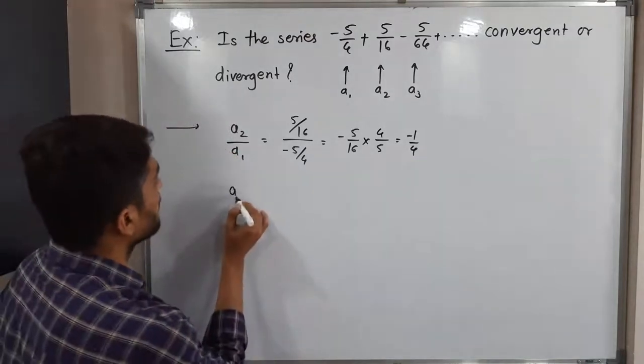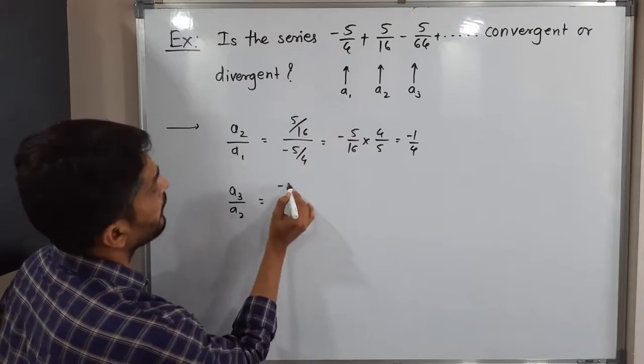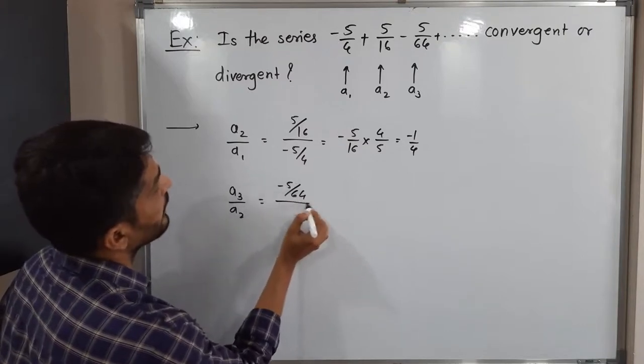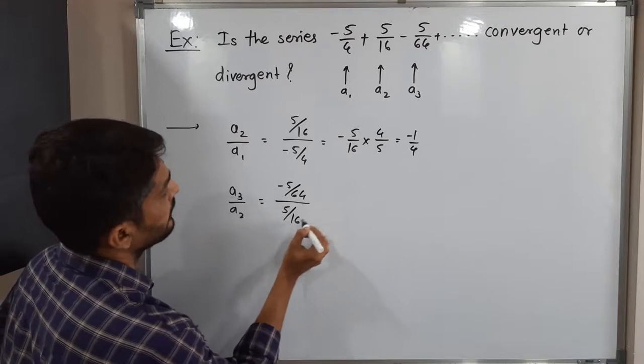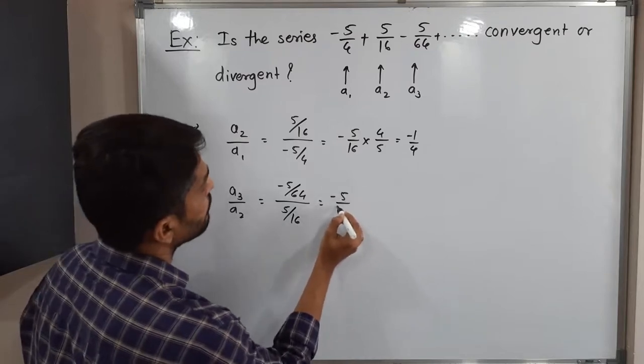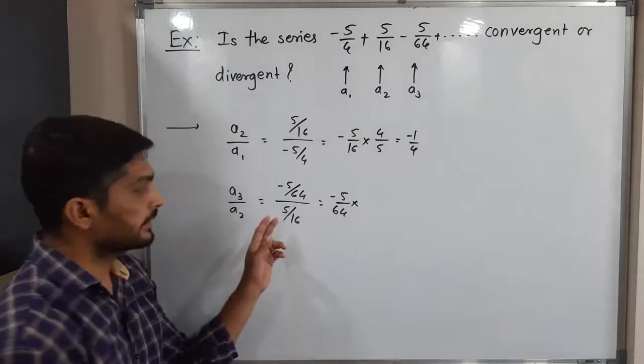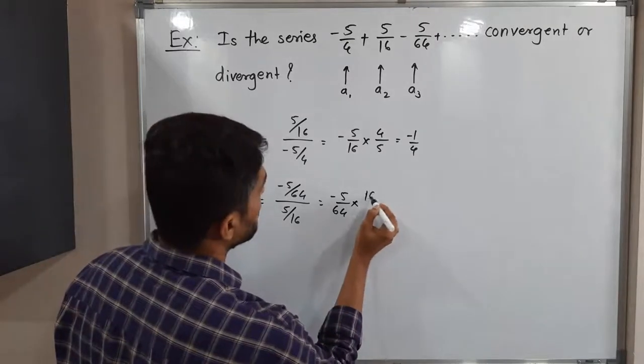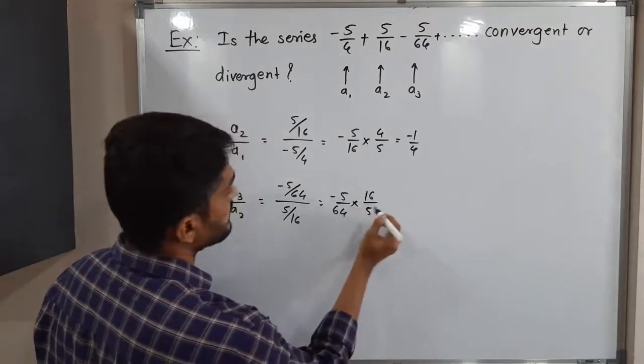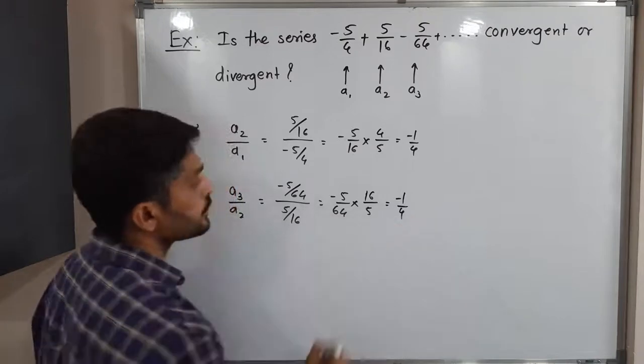Let us find A3 upon A2. What is our A3? Minus 5 by 64 and A2 is 5 by 16. Same technique I will use to simplify it. It is in denominator. If you interchange, it will be numerator 16 by 5. 5, 5 will get cancelled. 16, 16 cancel. Minus 1 by 4.